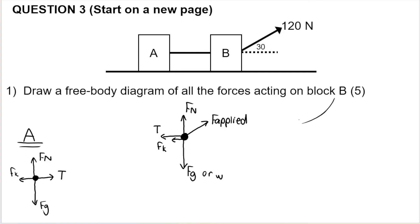Remember, the question asked for the free body diagram for block B, so my marks are allocated there: one, two, three, four, five — five marks, five arrows, no extra arrows. On your free body diagram for marks, you do not break up the force into its components. I'll draw a rough version where I do break them up, but that's just to help with the question.